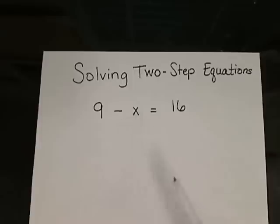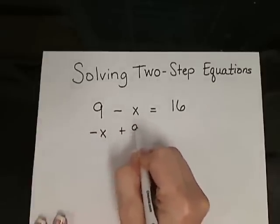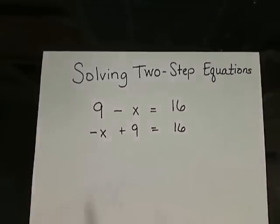Well, if we don't like our variable coming second, of course we could rewrite that as negative x plus 9 equals 16. Now we can see what's happening to the variable a little bit easier.